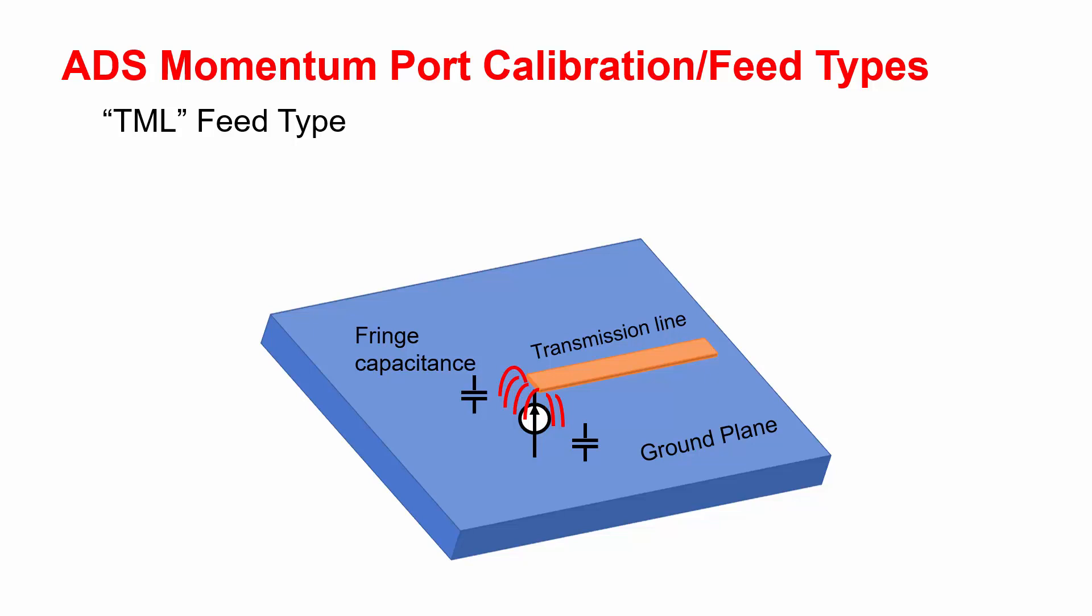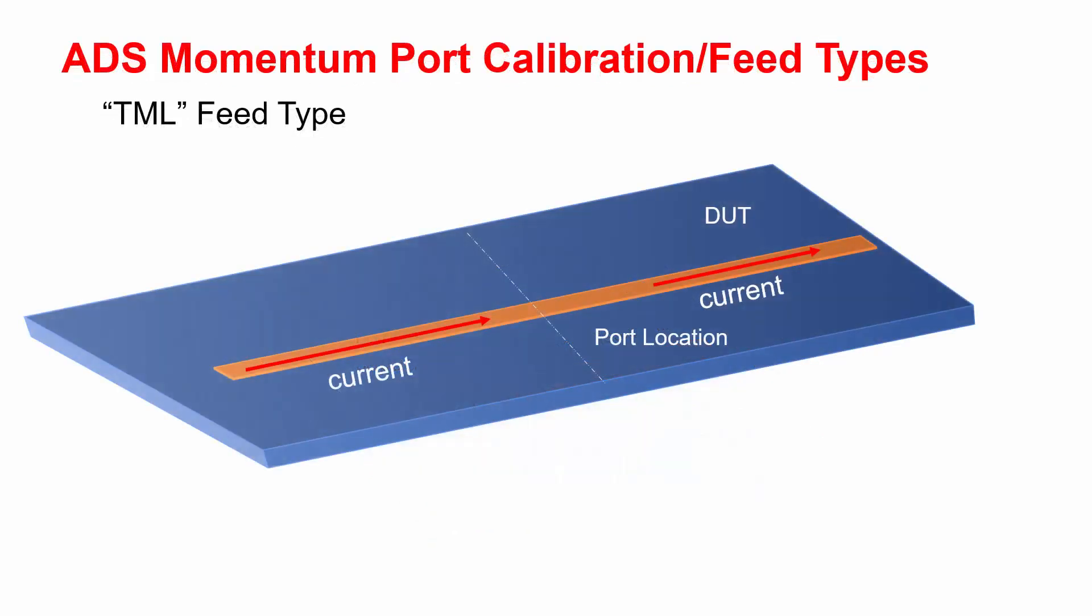So you want to remove this from your results. Furthermore, if your structure is connected to another transmission line, you may want to include the mutual coupling between the two, right? However, if you just simulate this only one part, that won't be included in your model.